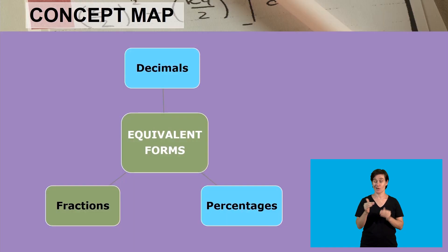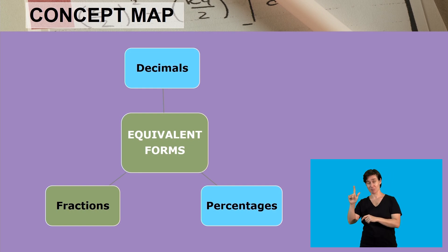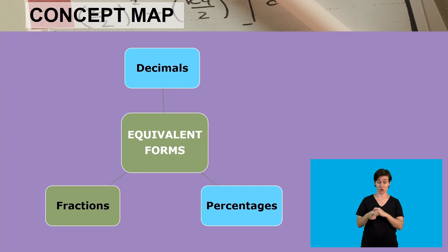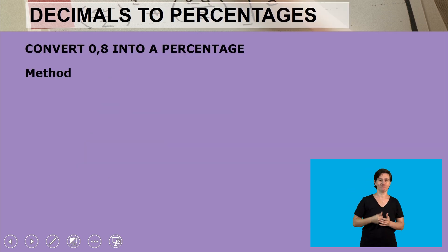Welcome back. Now let's continue. We are doing equivalent forms and we've done fractions to decimals and vice versa. Now we are going to do decimals — converting decimals to percentages and percentages back to decimals. That's what we'll be doing now.